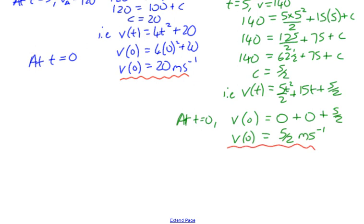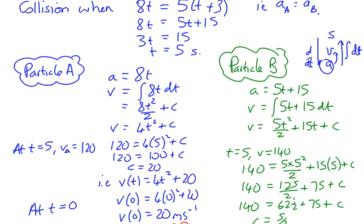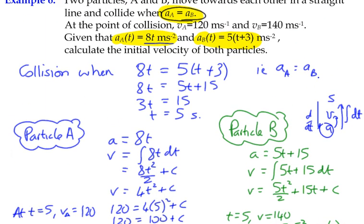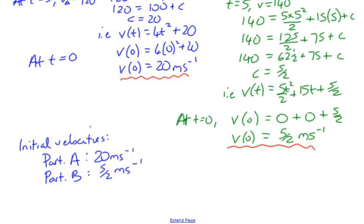To finish: the initial velocities are — particle A, 20 meters per second; particle B, 2.5 or 5 over 2 meters per second. We've done some integration, but this time with different values to substitute in rather than just zeros, and initially we had to puzzle out the actual time of collision. Rectilinear motion is a combination of differentiation and integration, and hopefully you can now solve some problems in this area.